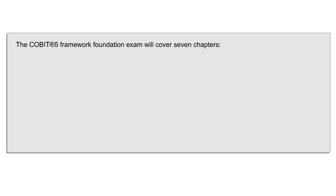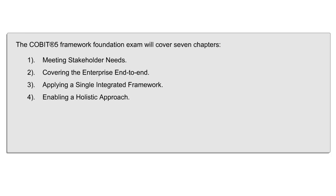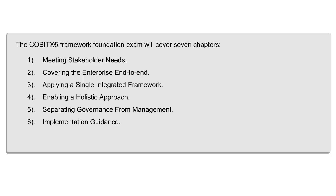The COBIT 5 Foundation exam syllabus will cover seven chapters: one — Meeting Stakeholder Needs; two — Covering the Enterprise End to End; three — Applying a Single Integrated Framework; four — Enabling a Holistic Approach; five — Separating Governance from Management; six — Implementation Guidance; and seven — The COBIT 5 Process Capability Model. This marks the end of the module. A quickfire round of questions will follow, so everyone should be prepared.